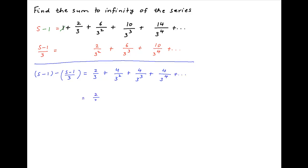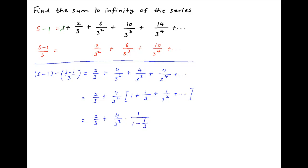The right hand side is equal to 2/3 plus, taking 4/3² common amongst the remaining terms, we get in brackets 1 plus 1/3 plus 1/3² plus and so on. Notice that the term in the square bracket is a geometric series with common ratio 1/3, and therefore the right hand side is equal to 2/3 plus 4/3² times the sum of the geometric series, which is 1/(1 minus 1/3).